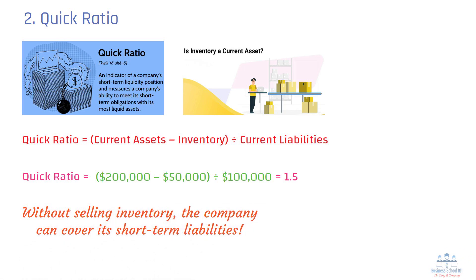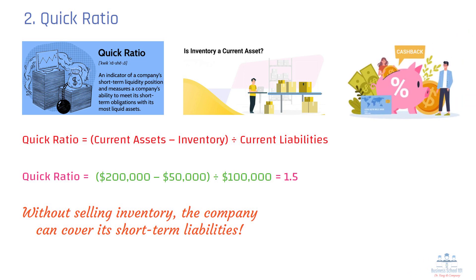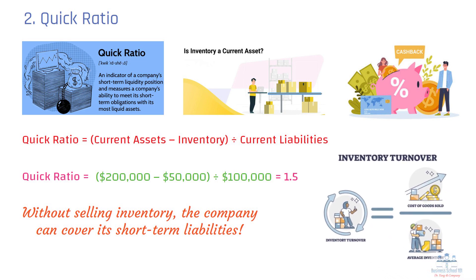The quick ratio is important because it highlights assets that can be quickly converted to cash. In industries with slow inventory turnover, like heavy manufacturing, it offers a clearer view of a company's ability to meet short-term obligations without relying on inventory.